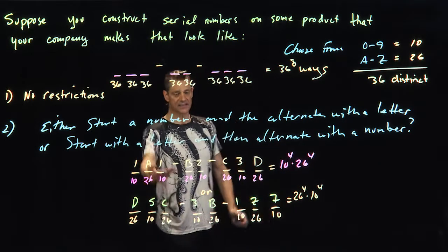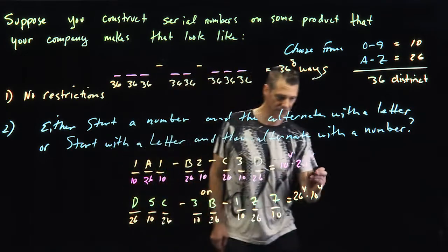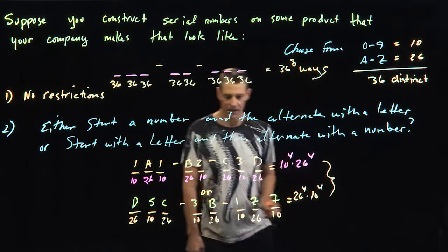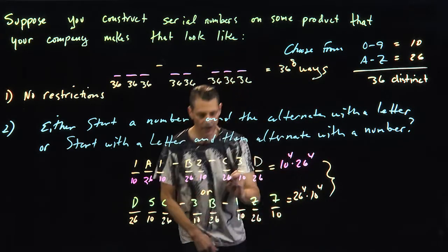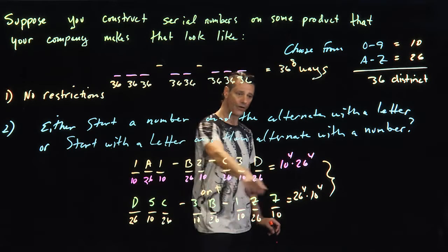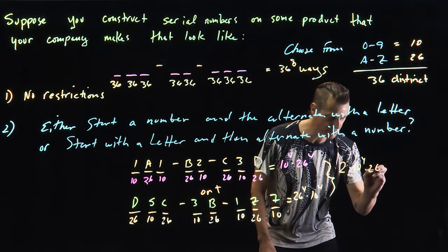You'll notice because of symmetry, there are eight slots here. Because of symmetry, these are the same. So the total number of ways is going to be this or plus in mathematics or this. So it's going to be two times 10 to the fourth times 26 to the fourth.